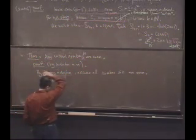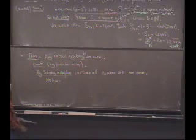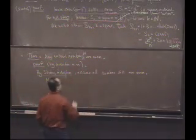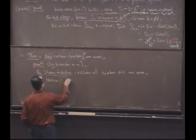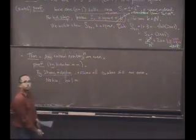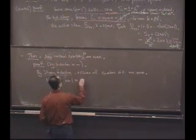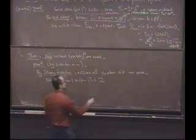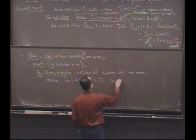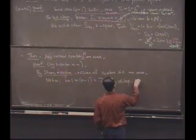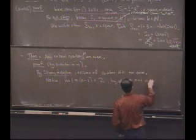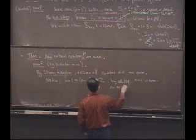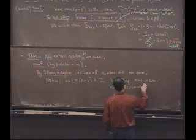Notice that if you give me a number n, so I assume all numbers less than, let's make this less than or equal to n are even. So let's look at n plus 1. Well, let's see. I claim n plus 1 is n minus 1 plus 2. Okay. And by the inductive hypothesis, n minus 1 is even.